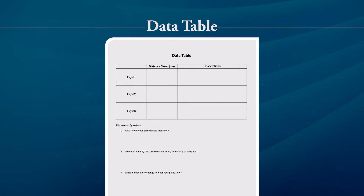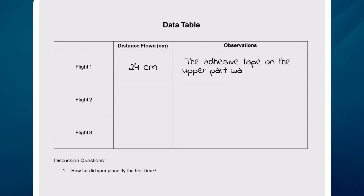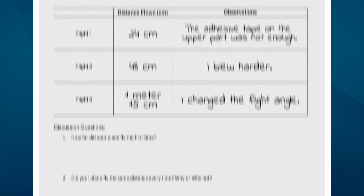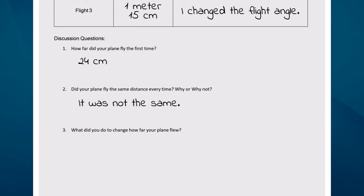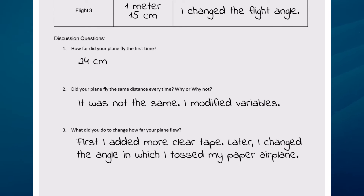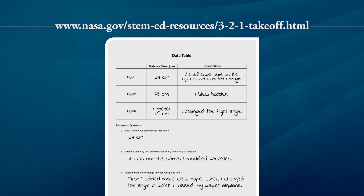Engineering research includes the analysis of data collected during design flights. This allows us to compare different solutions so we can select the best design that matches our specifications. Using the measuring tape, write down the distances each of your three flights covered, and note observations such as whether you need to blow harder, whether the plane was properly sealed, or whether your flight leveled. To sum up the activity, use the discussion questions and analyze how important it is for NASA engineers to consider the four forces and Newton's third law when designing an airplane. You can extend the activity by changing airplane sizes or construction materials.